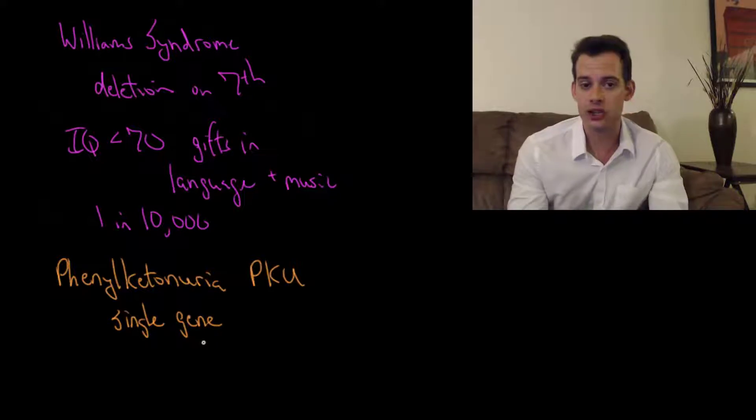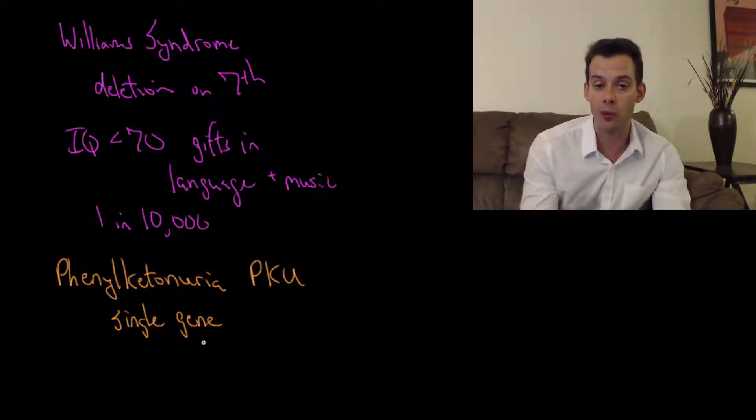So by intervening and making sure that people with PKU don't consume foods with phenylalanine in them, and you may have noticed some warnings on foods that contain things like artificial sweeteners that contain phenylalanine. And if you avoid those foods and you maintain this strict diet, then you're able to avoid the cognitive impairments that would normally result from PKU.